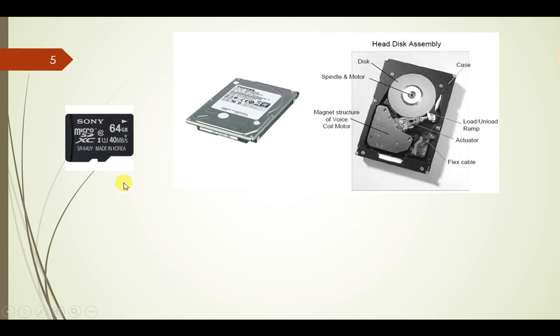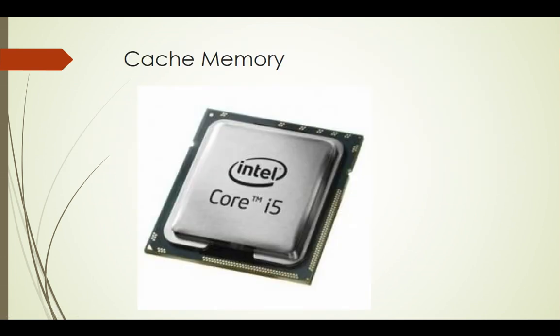Another type of memory you may have heard about is cache memory. Cache memory speeds up the processor or the system by storing data that needs to be accessed very frequently or very quickly by the processor. This memory is inside the processor — unlike the memories discussed so far, which are all outside the processor, cache memory lies inside the processor itself.